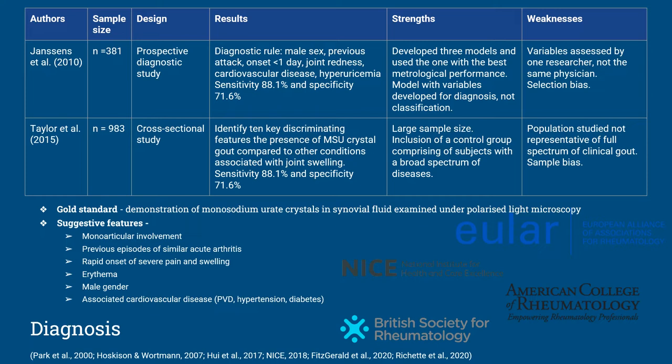A further weakness is the introduction of selection bias by using monoarthritis as an inclusion criterion, which would raise the possibility of gout among the studied patients. Because of the strict inclusion criteria, the applicability of the findings may be limited to patients with monoarthritis and not to patients with oligo- and polyarticular gout. Particularly in the elderly, the prevalence of oligoarticular and polyarticular gout increases as the disease progresses if it remains undiagnosed. The study could be improved by widening the inclusion criteria to represent a more real-world scenario.